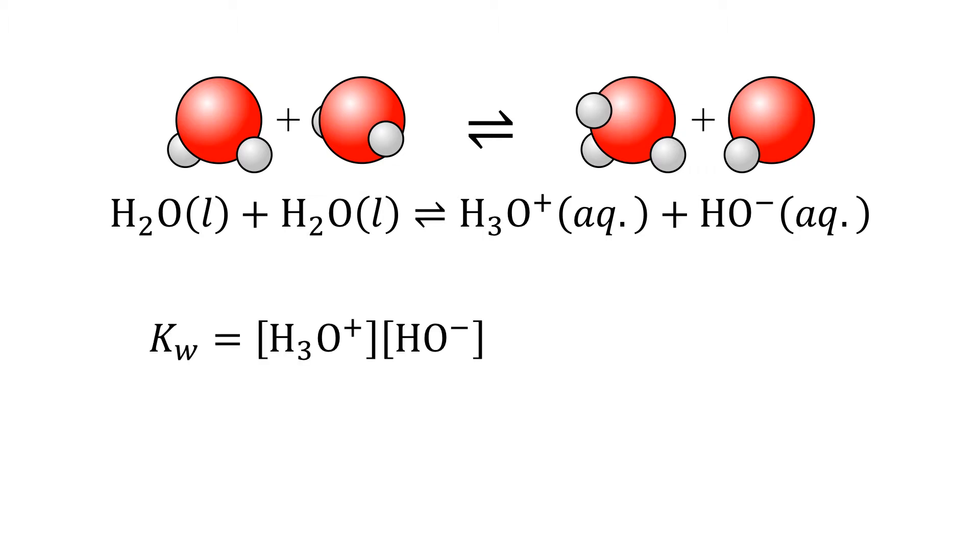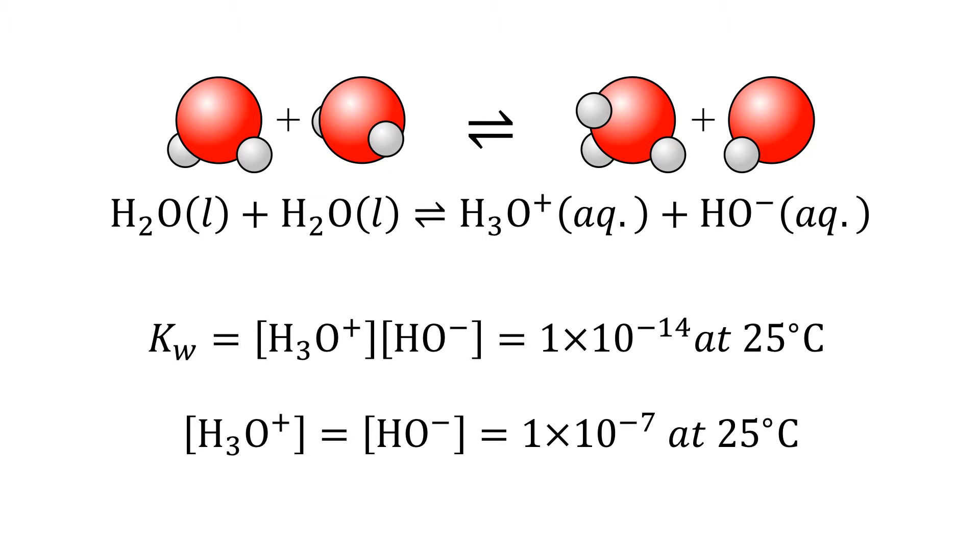The equilibrium constant is written as Kw, and in line with the rules of writing equilibrium constants, the concentration of water is not included. Conductivity measurements show that the concentrations of hydronium and hydroxide are equal at 25 degrees Celsius, and so this means that at 25 degrees Celsius, Kw is equal to 1 times 10 to the minus 14.